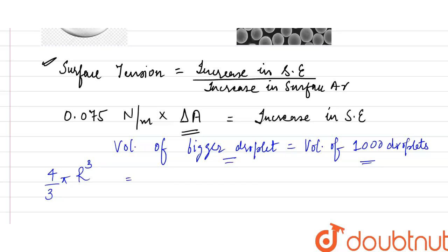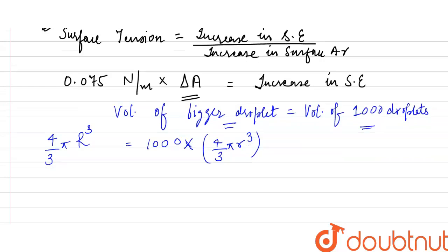Now, these are 1,000 droplets, so it is equal to 1,000 into volume of 1 sphere, which is 4 by 3 pi r cube. So, we get R cube is equal to 1,000 times small r cube. So, capital R divided by small r is equal to 10.